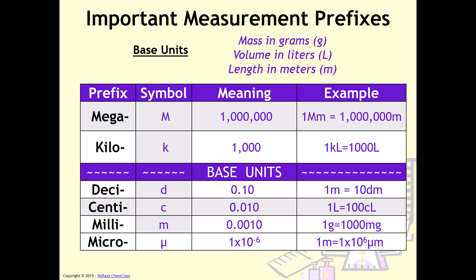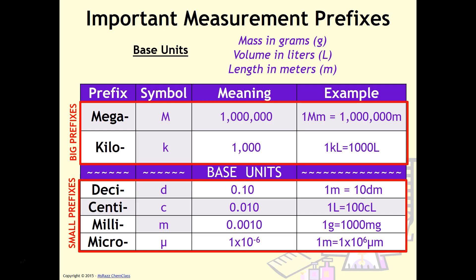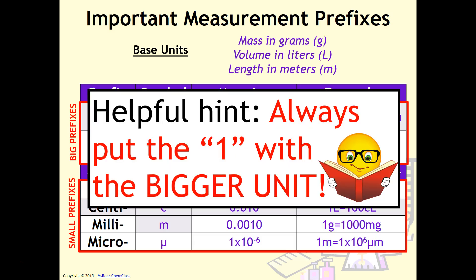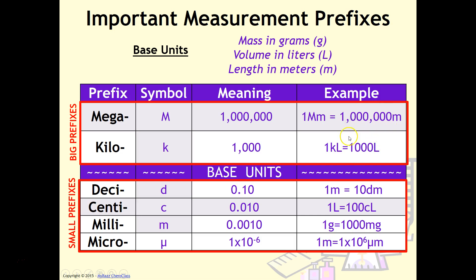This is a really helpful summary and visual for students to review. Because if you notice, I group them so that you have the big prefixes on the top. You have the small prefixes on the bottom. And the base units is what separates them. Another really helpful hint is you always want to put the one with the bigger unit. So what that means is, for example, mega is bigger than the base unit. So that's why I put the one with the megameter and not with the meter. Conversely, the base unit is larger than deci. So that's why I put one meter equals ten decimeters. Another way to look at it is it takes ten decimeters to equal one meter. So it takes a lot more of the smaller prefix to equal the larger one.